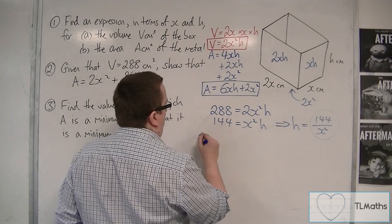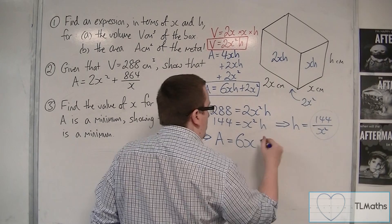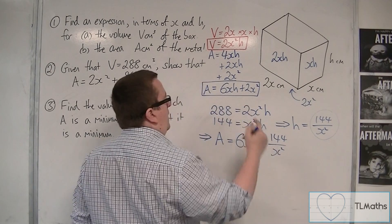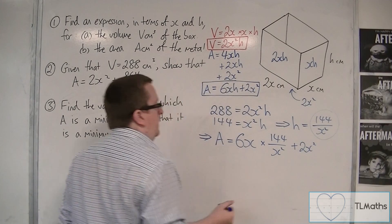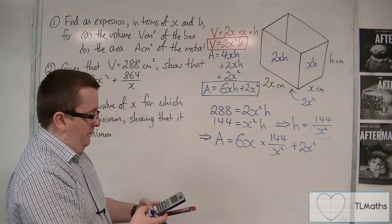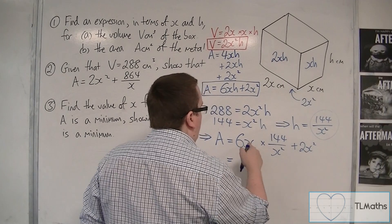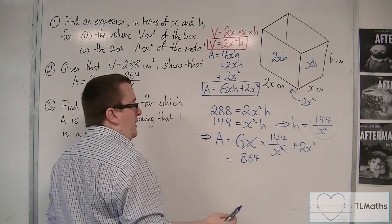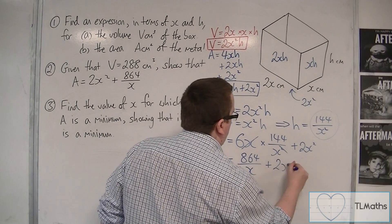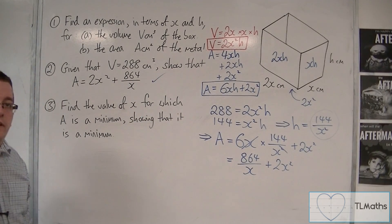So, that means that we get A equals 6x times h plus 2x squared. Now, 6 times 144 is 864. And so we get 864. That x cancels with one of the x's in the denominator there, leaving with 864 over x plus the 2x squared. And that is exactly what they have in the question.